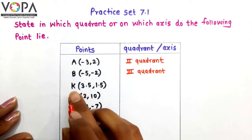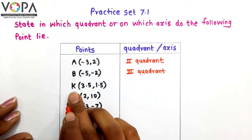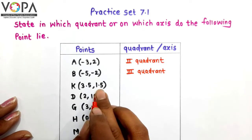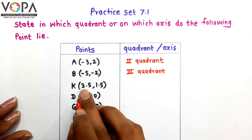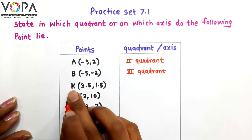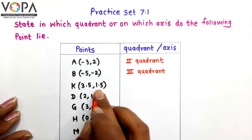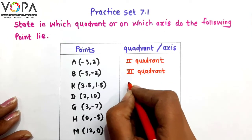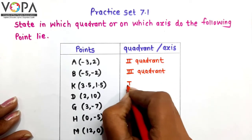Next point is K. The coordinates of point K are 3.5, 1.5. Here both coordinates of point K are positive. Therefore K lies in the first quadrant.